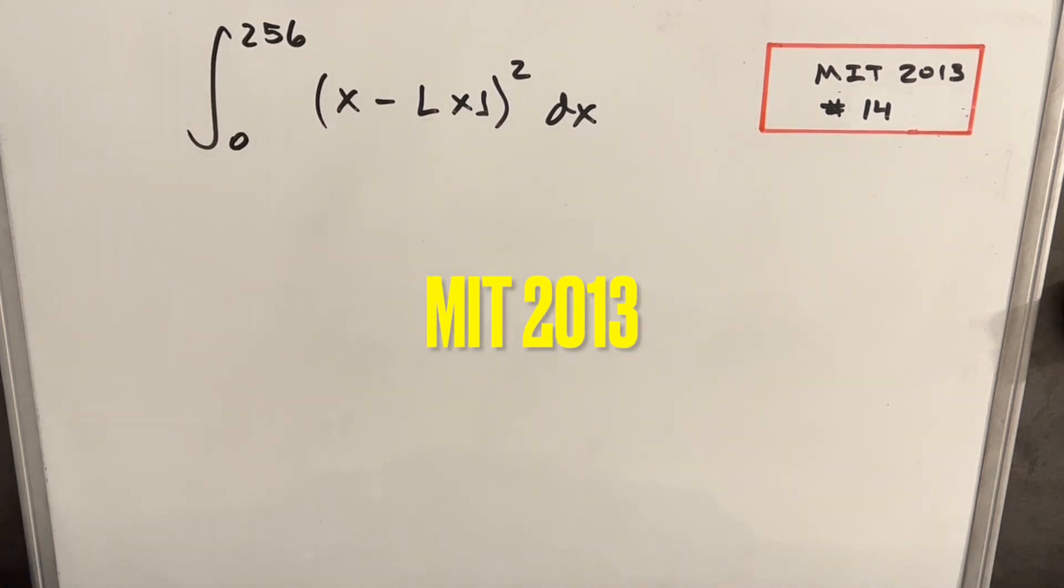Hey, we've got ourselves a really interesting integral today from MIT 2013. This was problem 14. We have an integral from 0 to 256 of x minus the floor of x all squared dx.